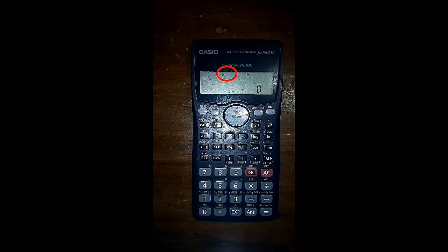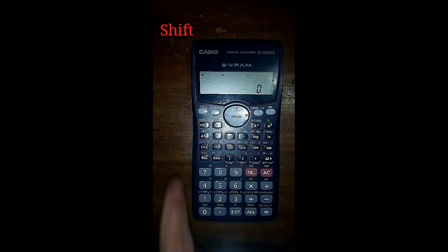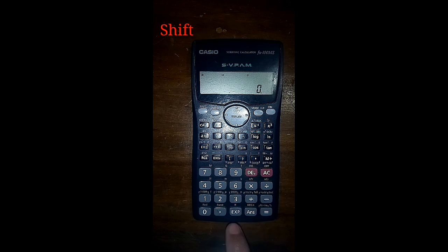Now, for the specific value, we have to press SHIFT, then 3, as in 3 we have here DIST.